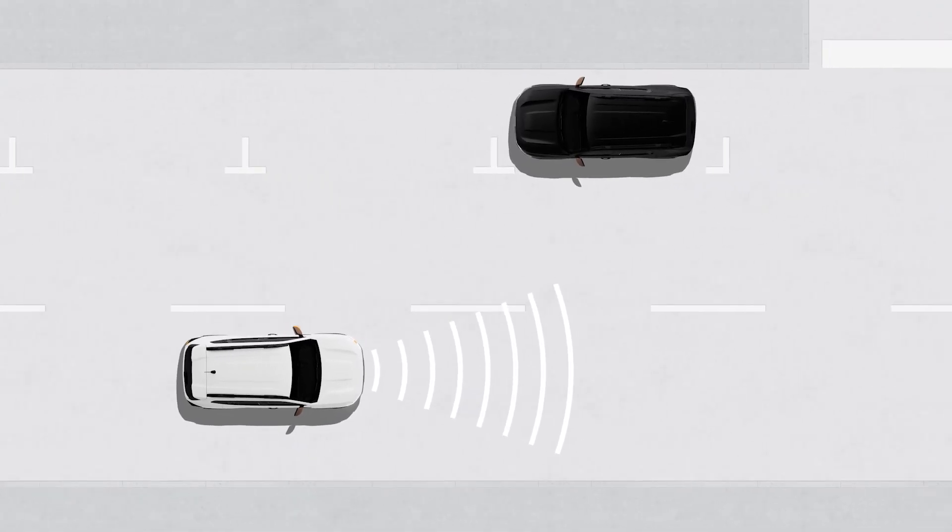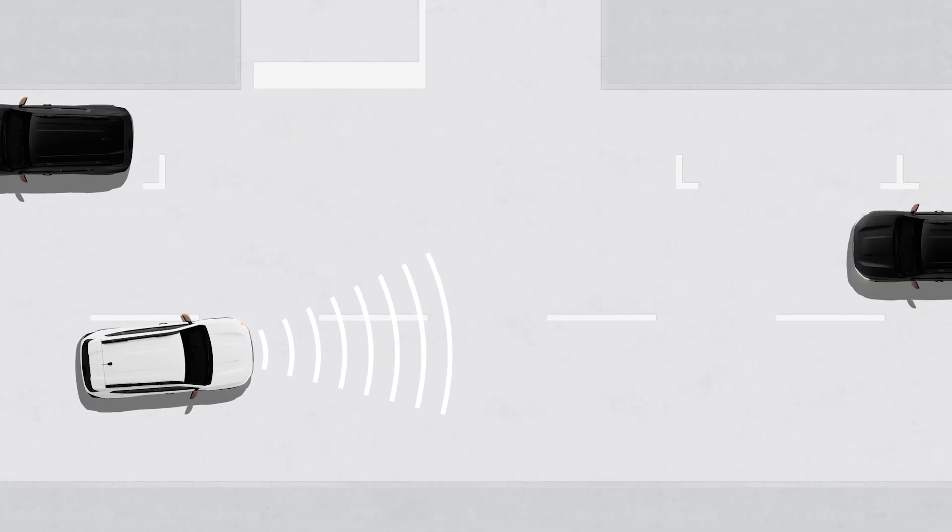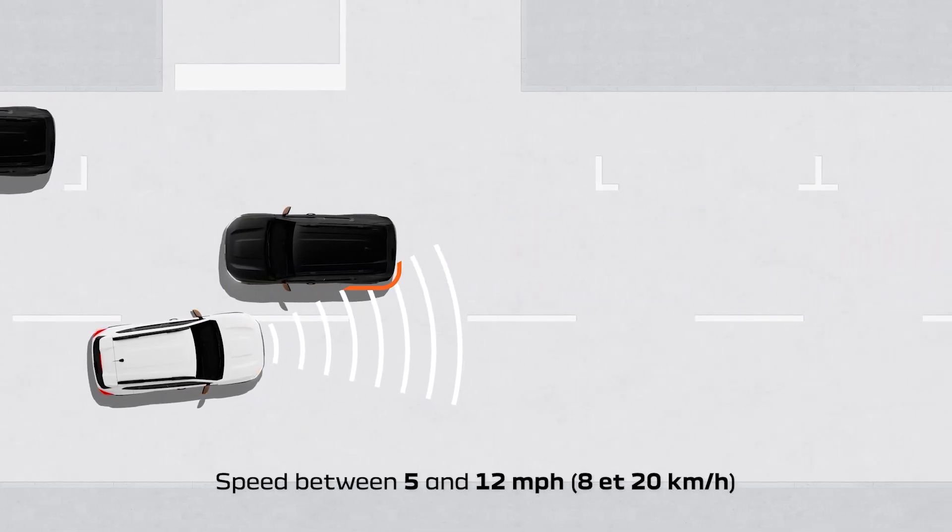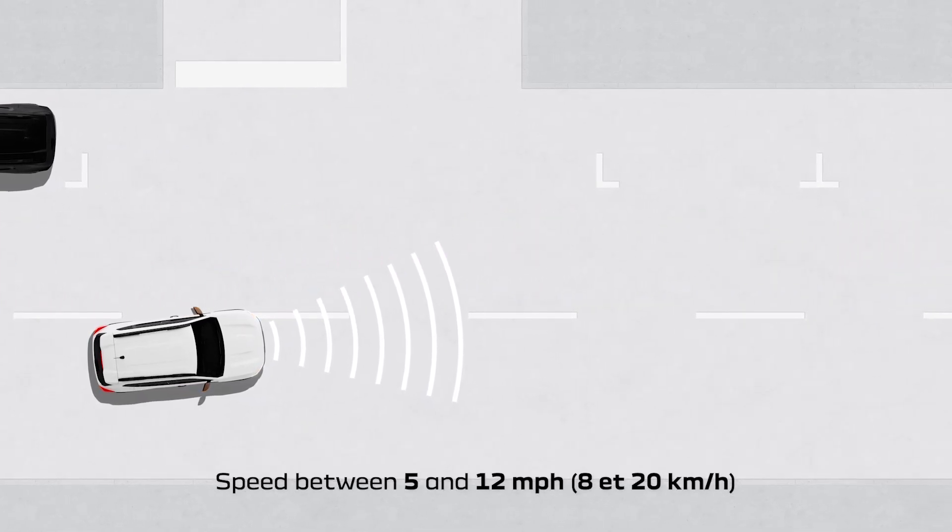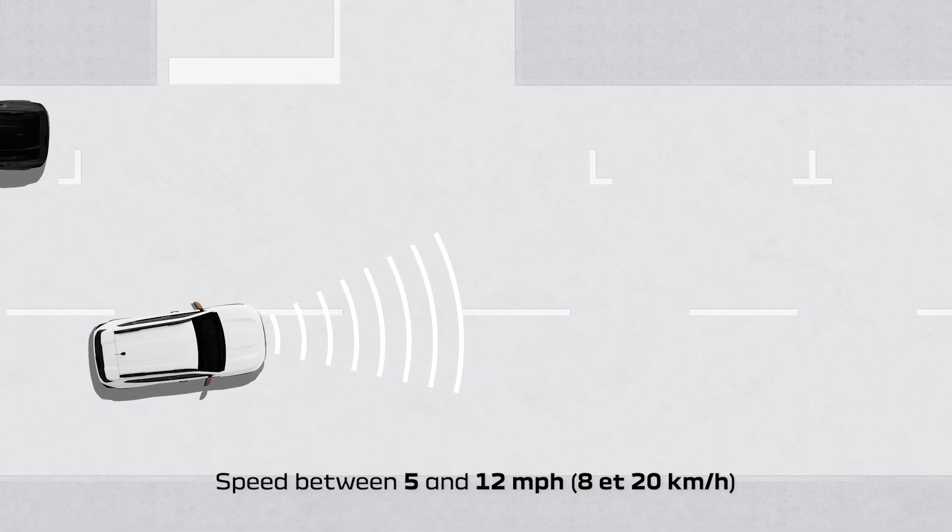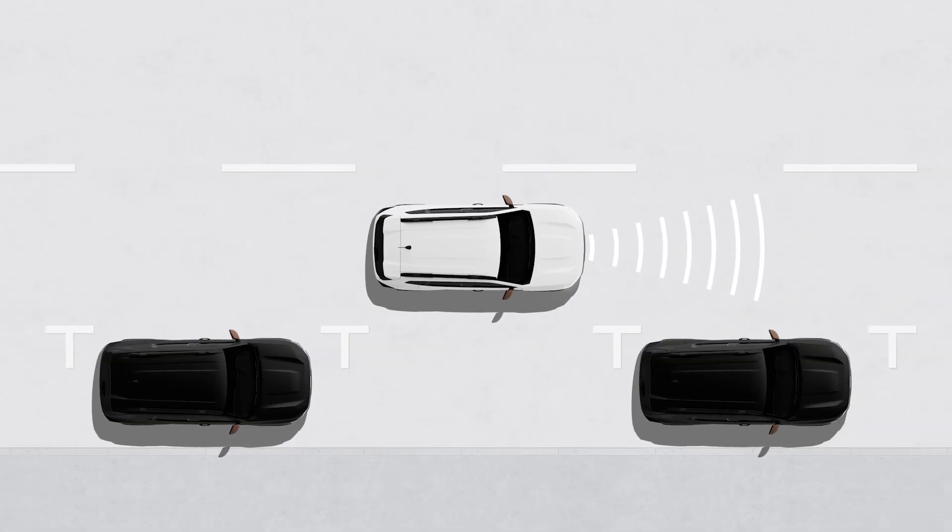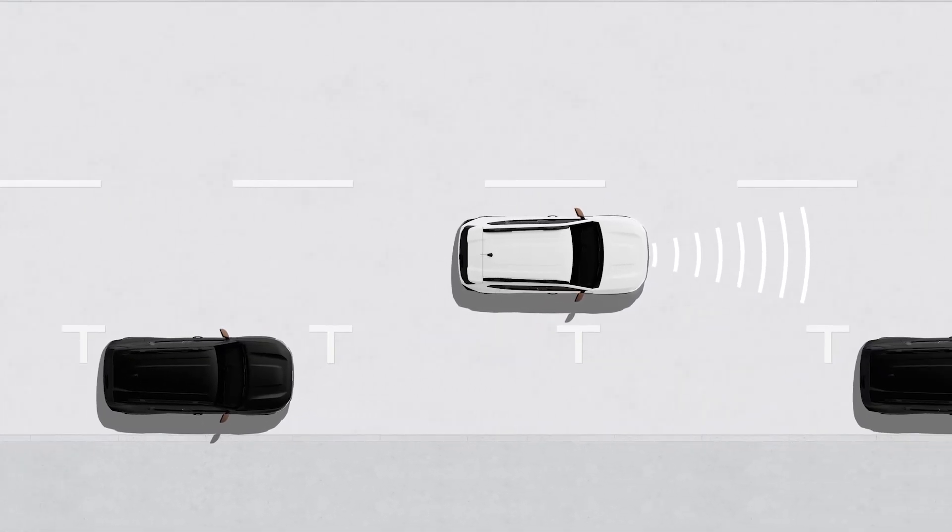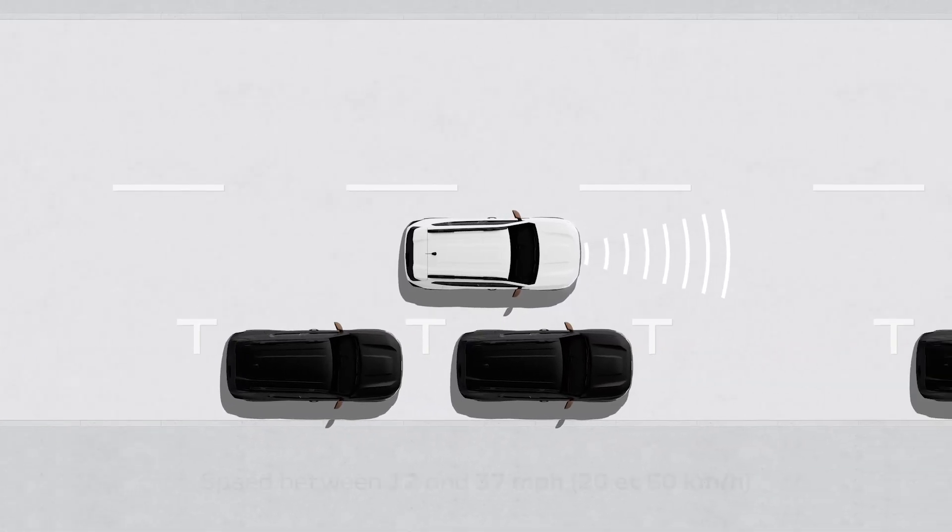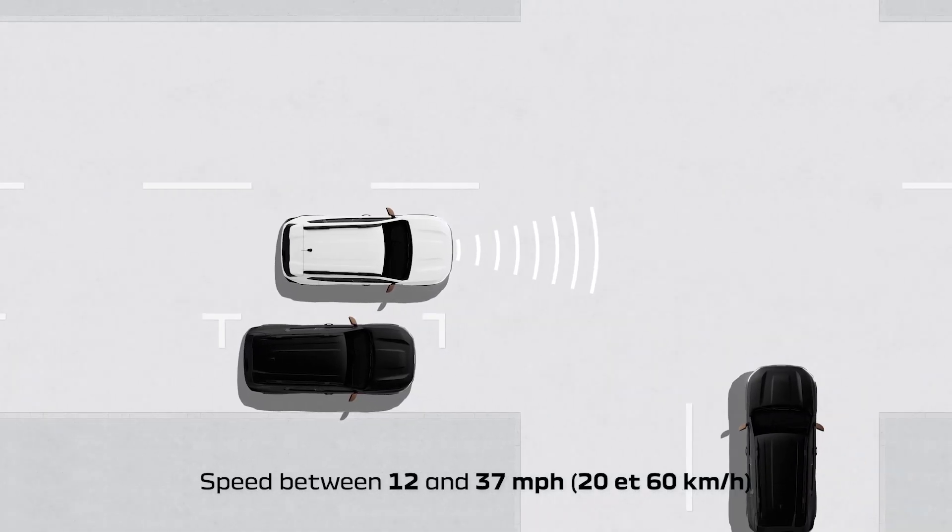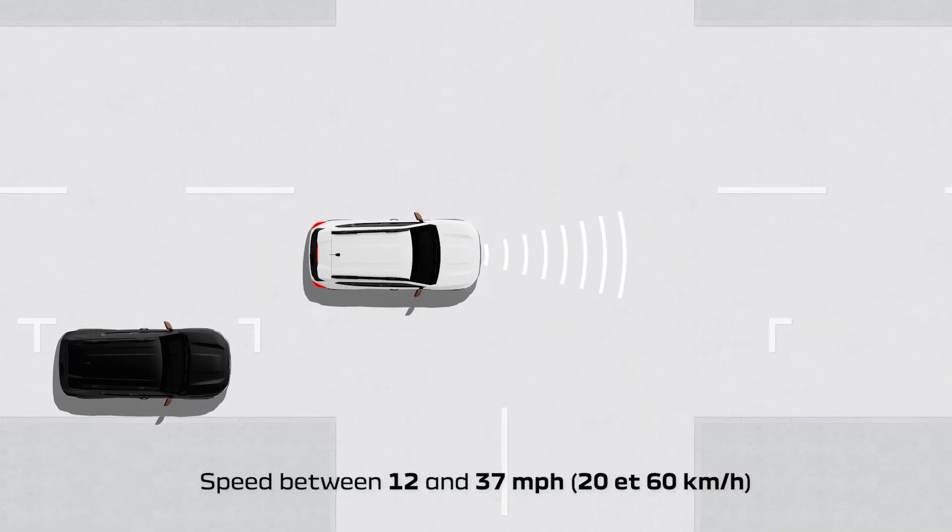When you are at a crossroads, the system detects oncoming road users when you are driving at between 5 and 12 mph with the direction indicator on. Finally, vehicles crossing at right angles to your lane are detected when your speed is between 12 and 37 mph.